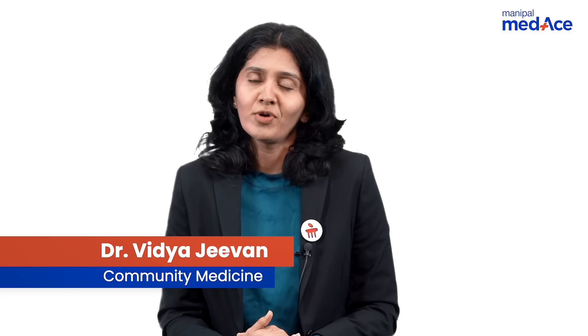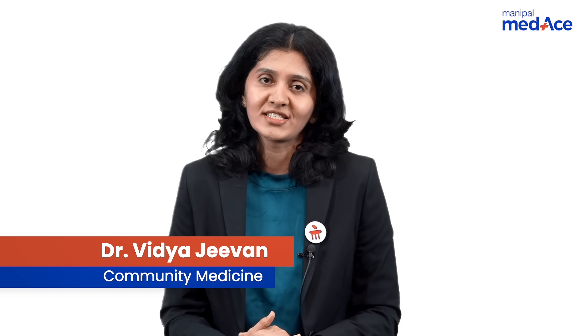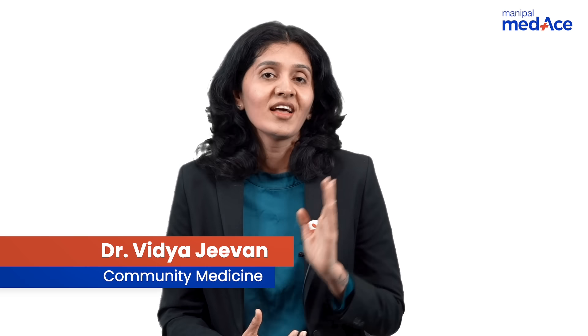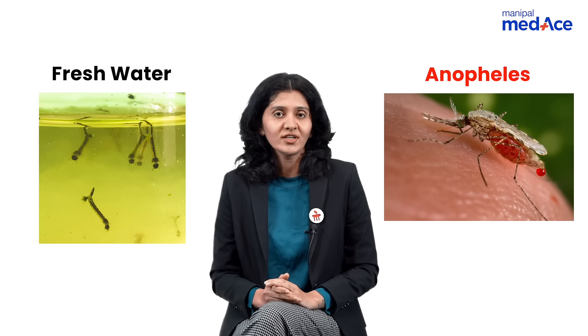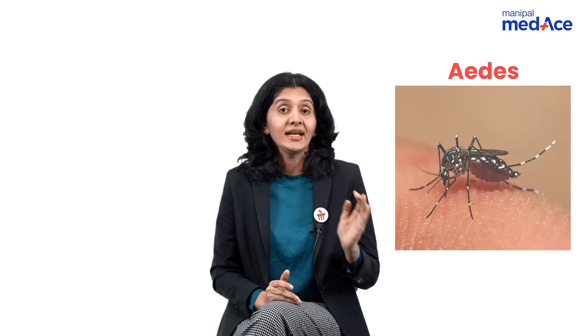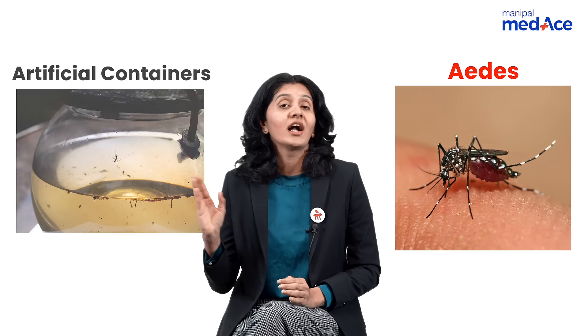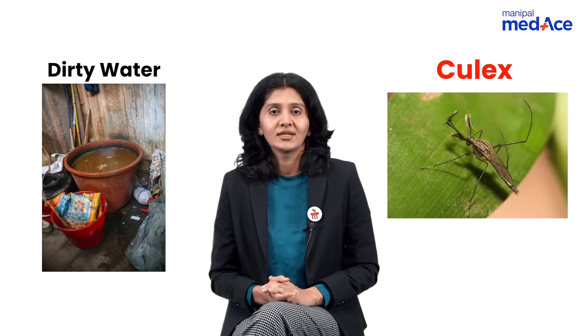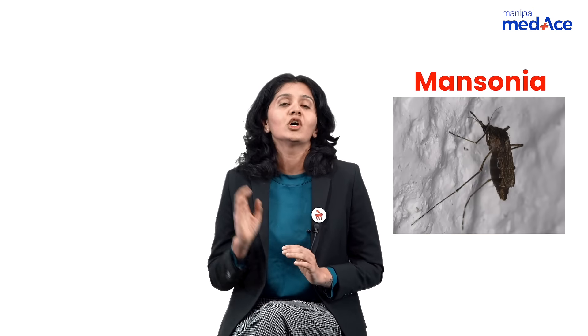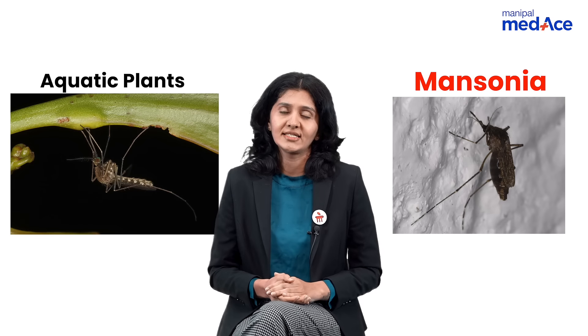Can you name the four most important species of mosquitoes? Anophilus, which spreads in fresh water. Aedes, which is found in artificial containers. Culex, which spreads in dirty water. Mansonia, found on aquatic plants.